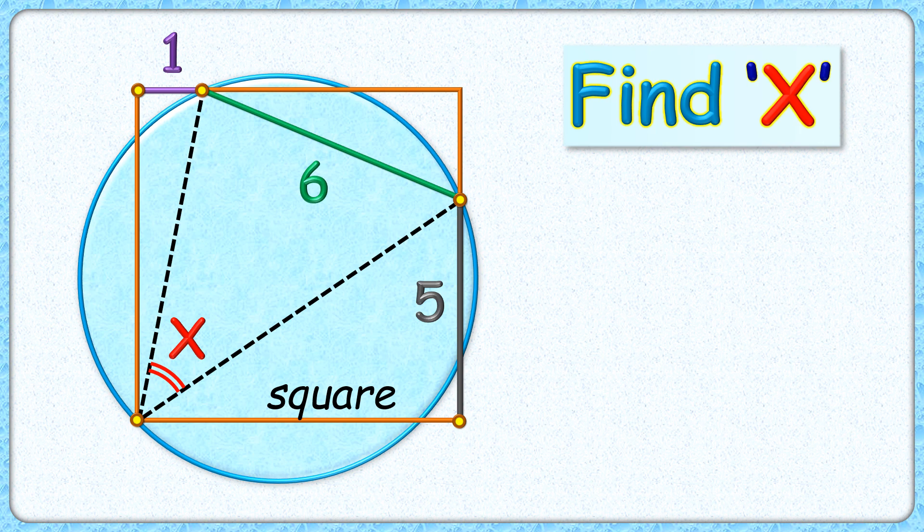This interesting question gives us a square and a circle. The length of the purple, green, and black line segments are one, six, and five centimeters. The exciting part is, with this limited data, we have to find the value of angle x.